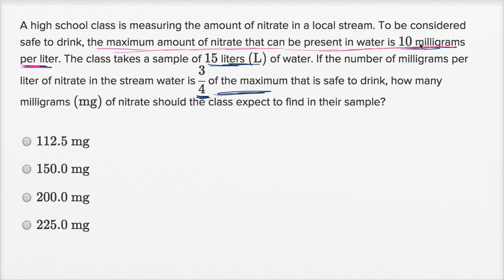So what's three-fourths of 10 milligrams per liter? Let's just write that down. So the maximum is 10 milligrams per liter. In their sample, they find three-fourths of this maximum concentration. So let's just multiply that. We can multiply that times three-fourths, which is going to be equal to what?